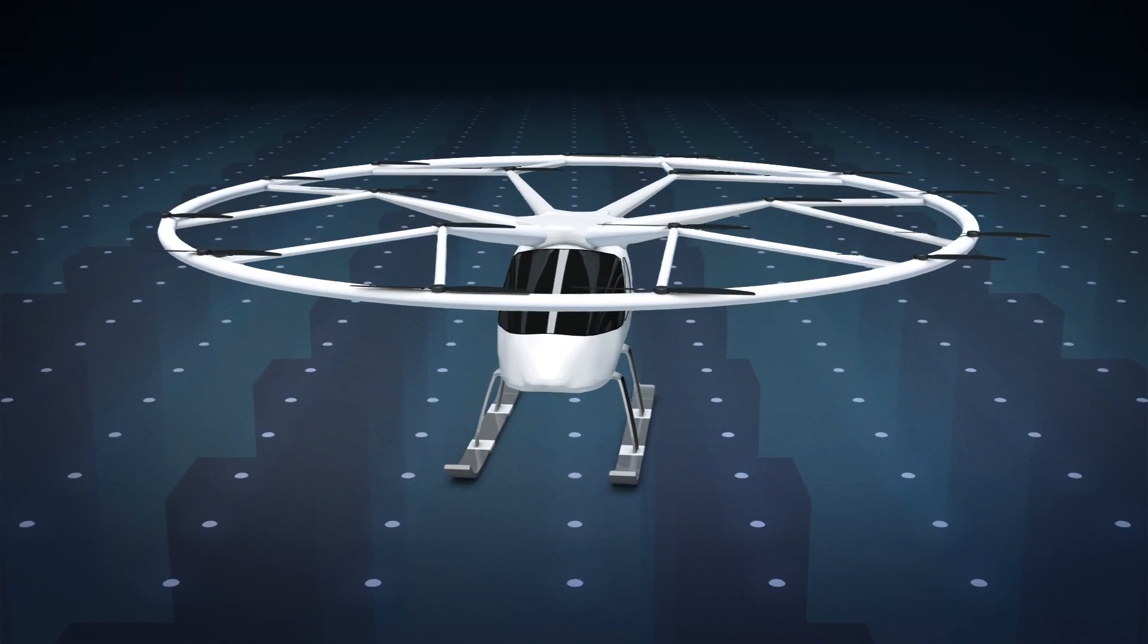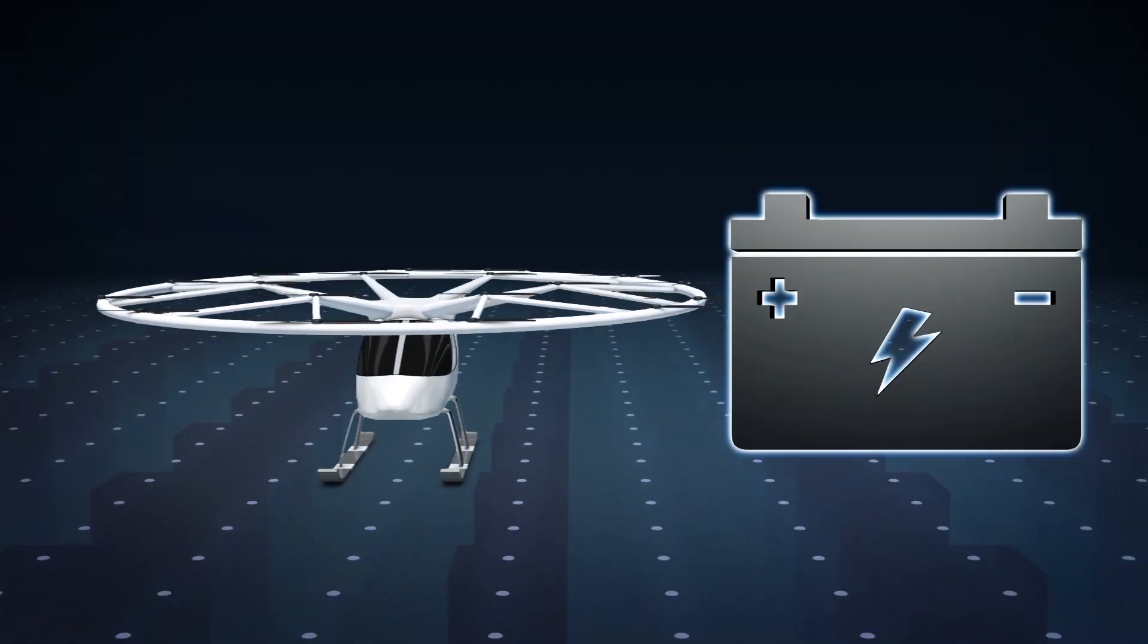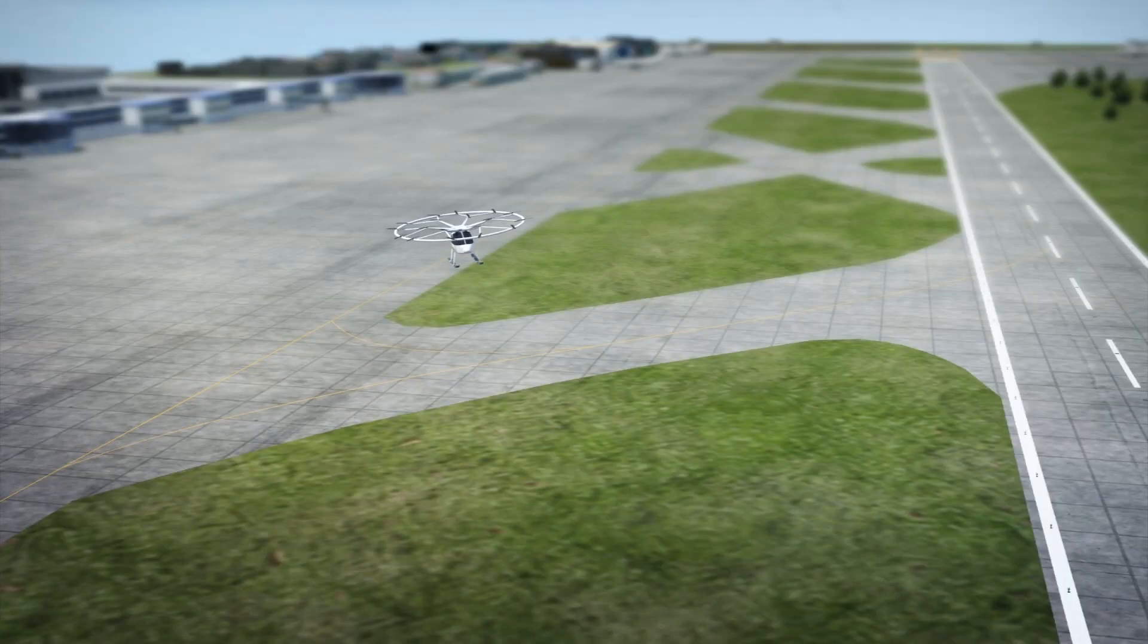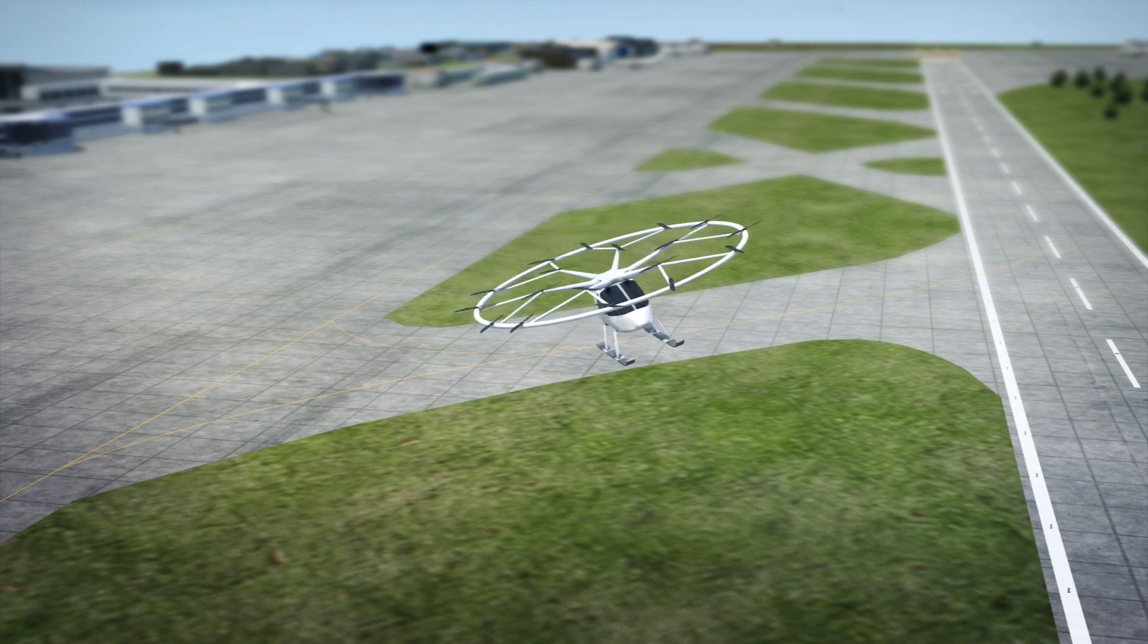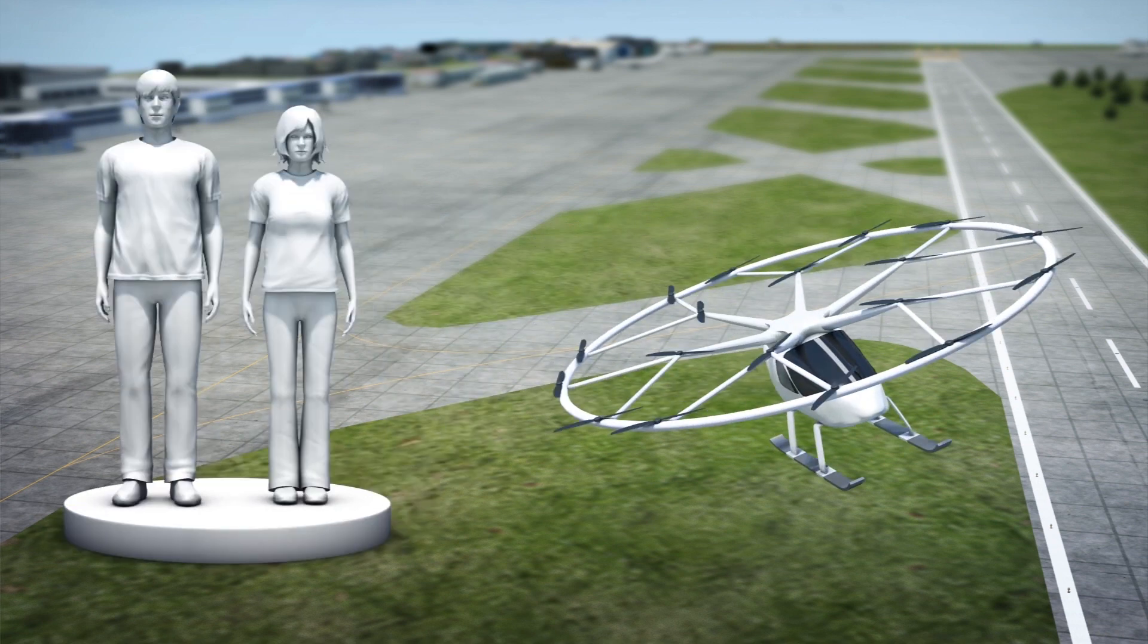Volocopter's website says that the flying vehicle is powered by electric batteries and has a range of around 27 kilometers with speeds of up to 100 kilometers per hour. It can carry up to two people.